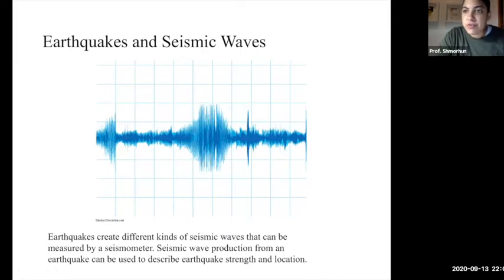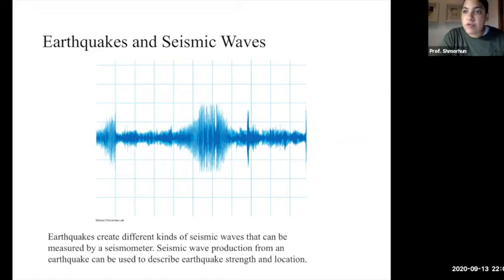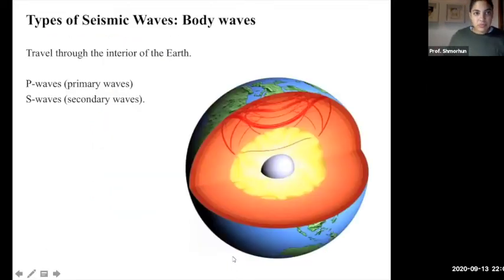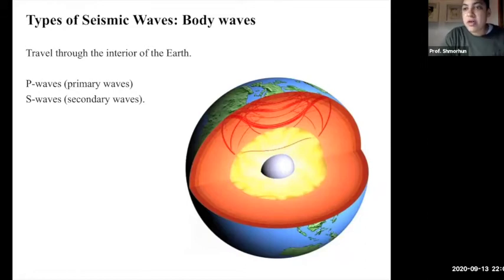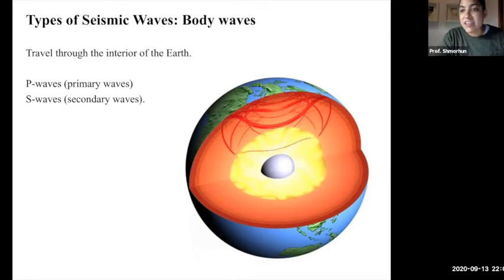We measure seismic waves through machines called seismometers. Measuring the different types of seismic waves through seismometers helps us determine the earthquake location — exactly where that earthquake occurred — as well as the strength of that earthquake. We have two main types of seismic waves: body waves, which travel through the interior of the Earth, and surface waves, which travel at or just below Earth's surface. We have two main types of body waves: P waves (primary waves) and S waves (secondary waves).